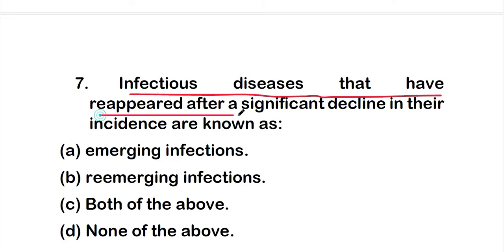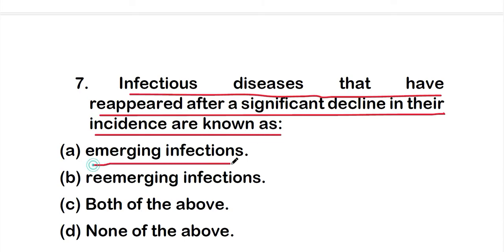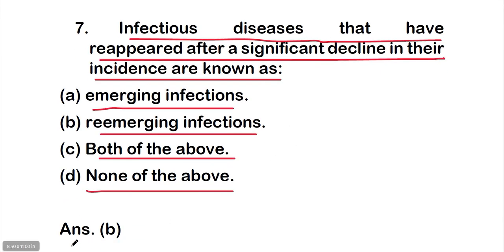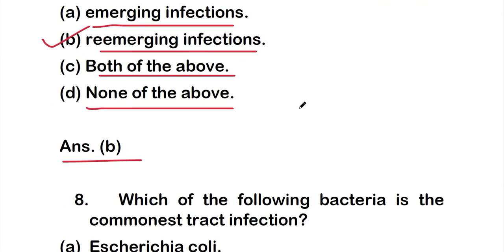Question 7: Infectious diseases that have re-appeared after a significant decline in their incidence are known as — option A: emerging infection; option B: re-emerging infection; option C: both; option D: none. The right answer is option B: re-emerging infections — diseases that re-appeared after a significant decline in their incidence.